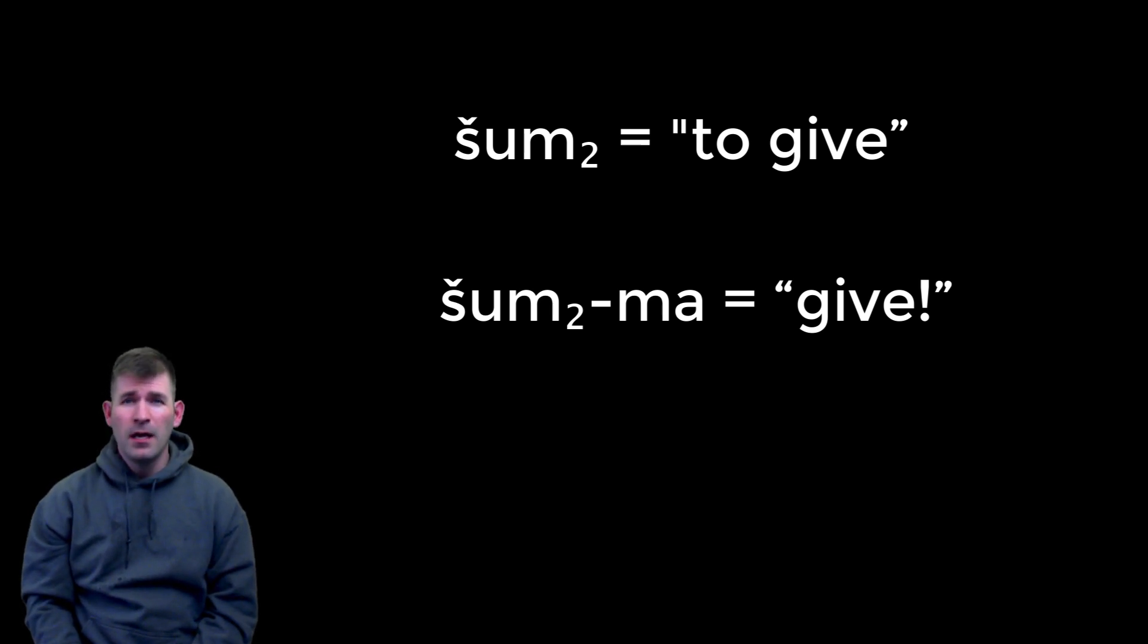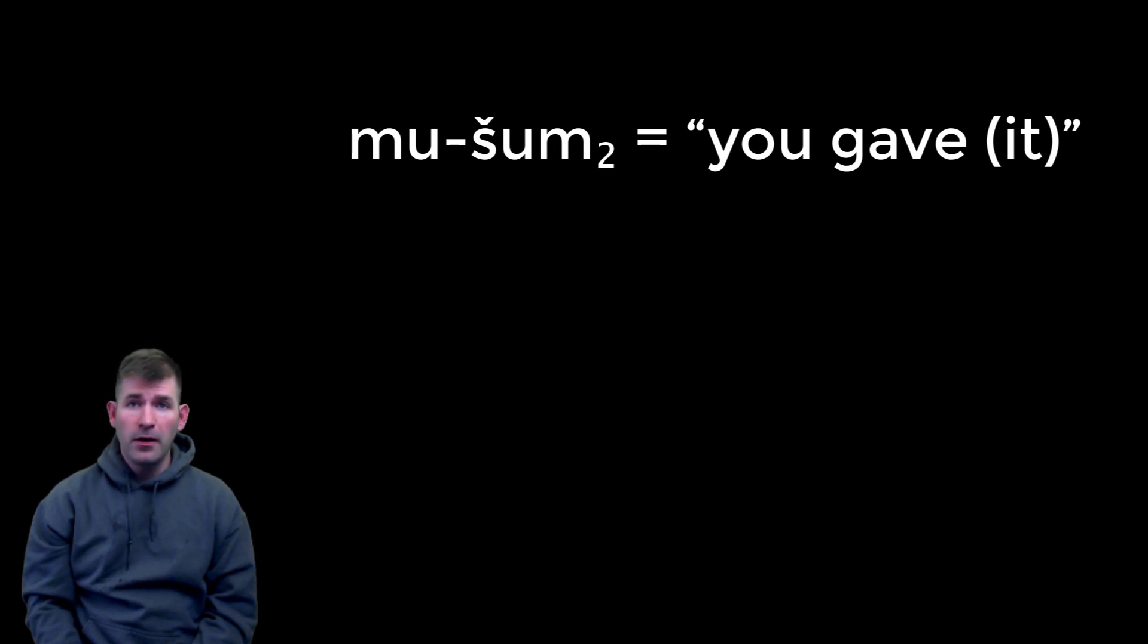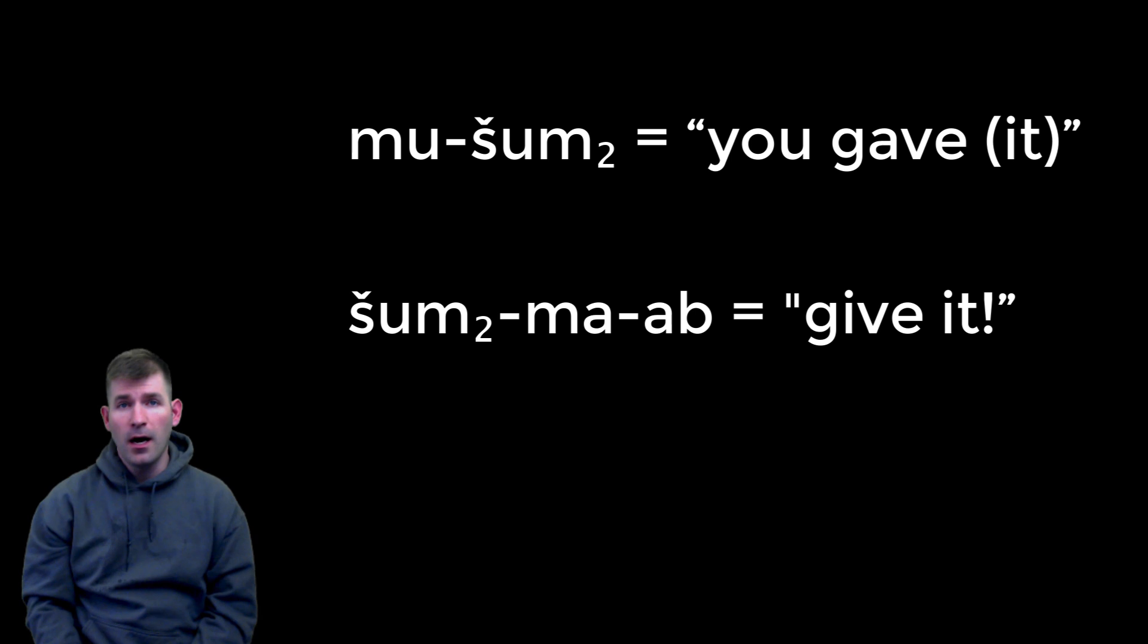Very often, however, the verbal chain remains but is slightly modified. Thus, if the form mu-šum₂ means 'you gave it,' the imperative would be šum₂-ma-ab, 'give it!' Without worrying about the ma-ab for the moment, you quickly notice that the šum₂ has been moved from its normal position near the end of the verbal chain to the very beginning. This is the essence of the form of the imperative.